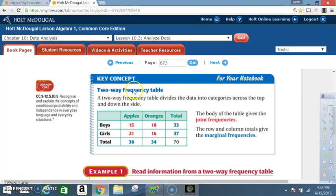Key concept: two-way frequency table. A two-way frequency table divides data into categories across the top and down the side. In this case boys, girls and a total. Apples, oranges and a total.